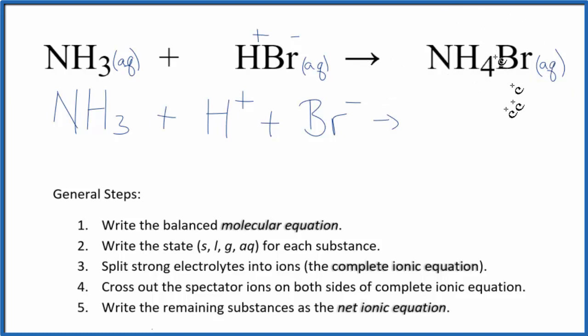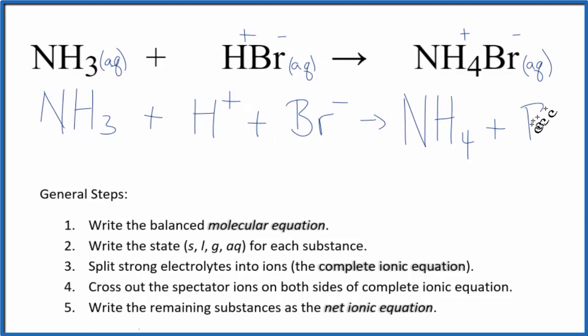In the products, we said that ammonium compounds are very soluble. So we'll have our NH4 plus. This is the ammonium ion. It has a 1 plus charge. Very good to remember. And the bromide ion. So we'll write NH4 plus, plus the bromide ion, Br minus.